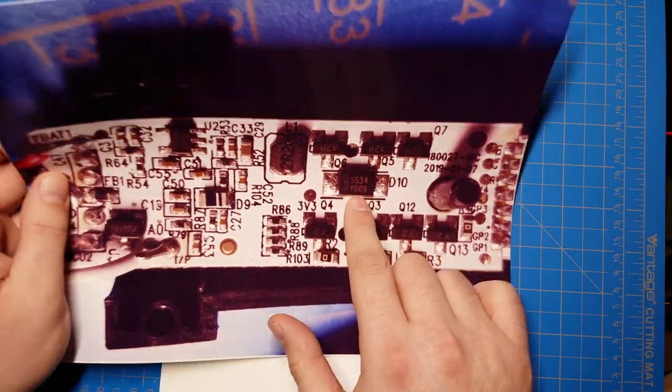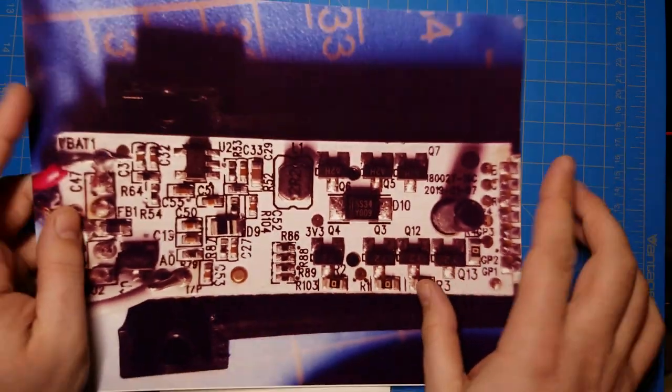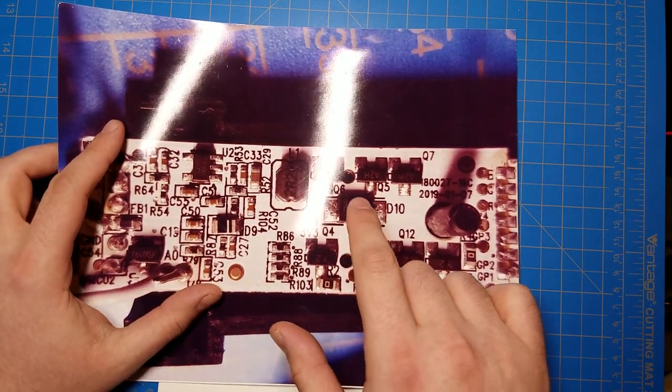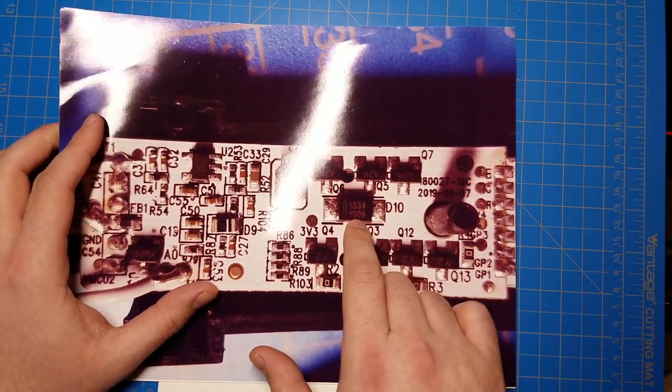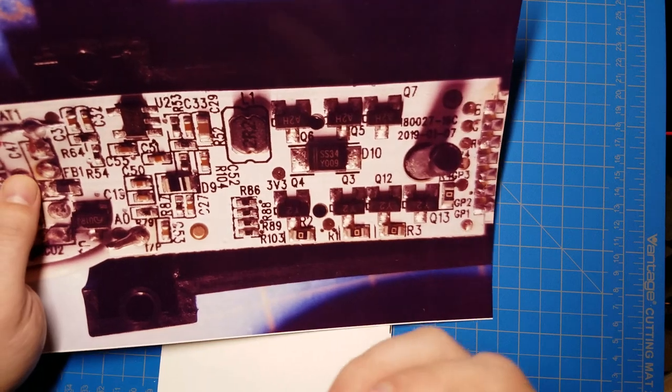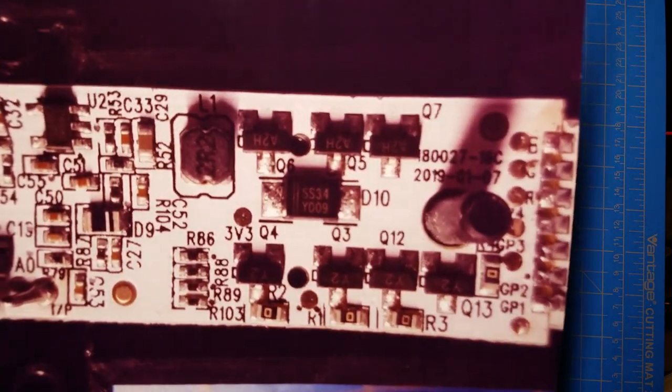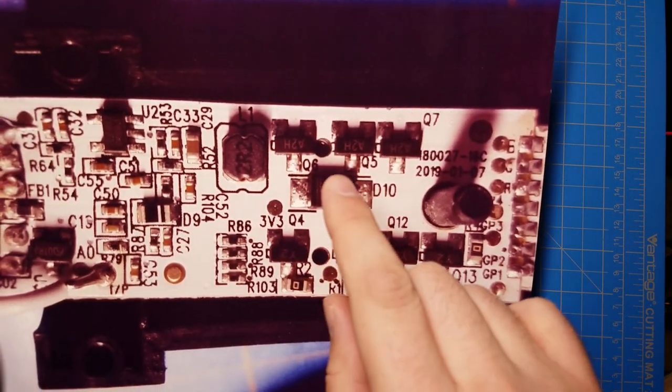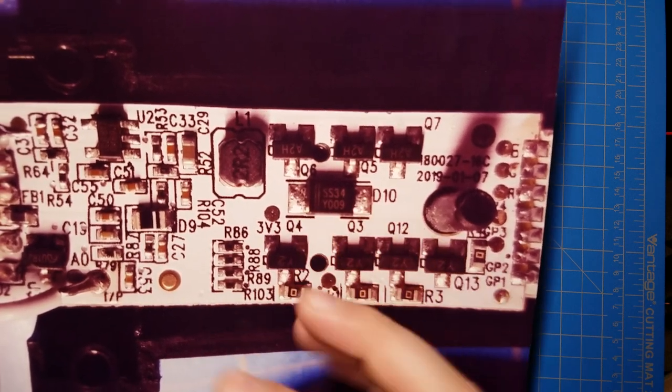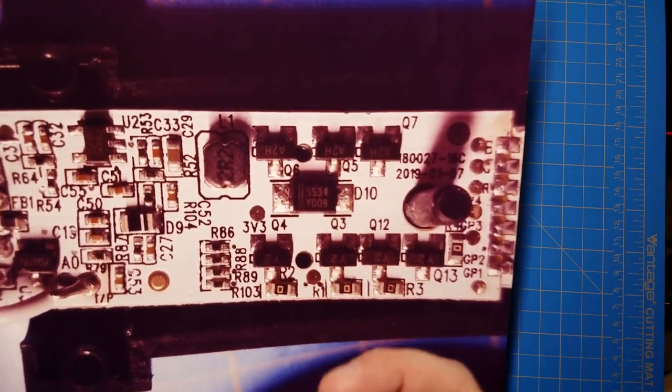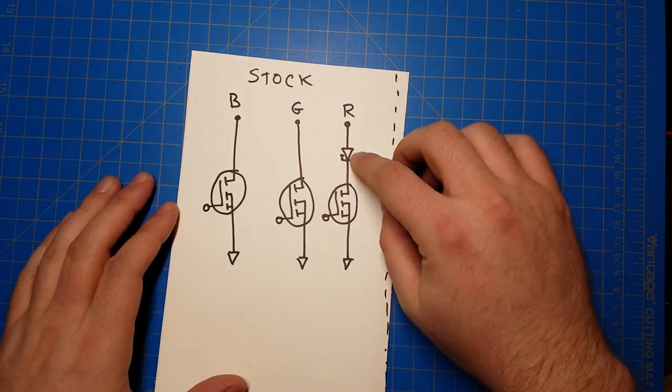It's got this big giant Schottky diode. It's a rectifier diode. It's intended to use, it's intended to handle lots of current, lots of electricity. It's not using a lot of electricity here. The reason they need a beefy thing here is because they need a low forward voltage.